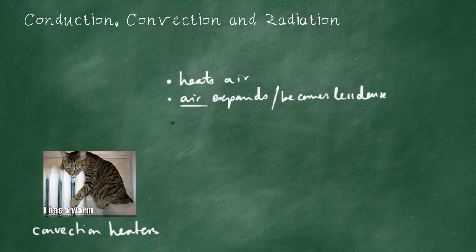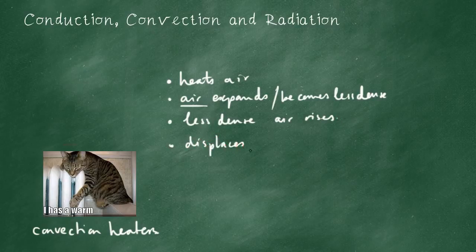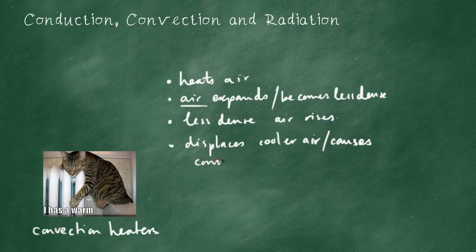Now, in any fluid - that is a gas or a liquid - less dense things float. So the less dense air rises. This displaces the cooler air and causes what we know as a convection current. Let's imagine this entire blackboard is our room. The air around it has heated, it's expanded, so it's become less dense, so it has risen.